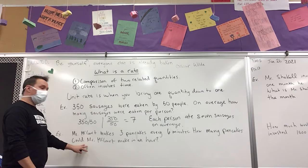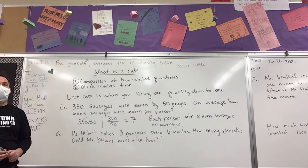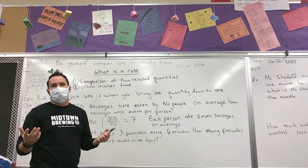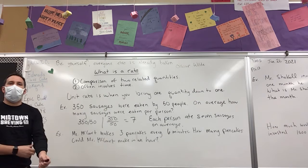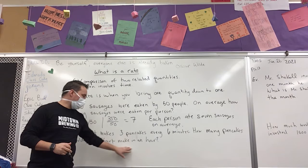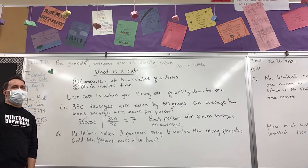Now let's go to our second example. Mr. McCourt makes three pancakes every six minutes — absolutely, because they have to cook. I don't want them to be mushy in the middle, so I take my time. That's how I get those golden, fluffy pancakes. How many pancakes could Mr. McCourt make in an hour? How are we going to figure that out?